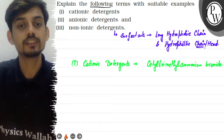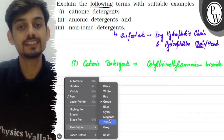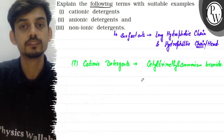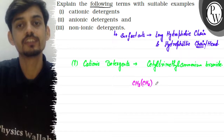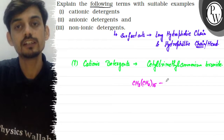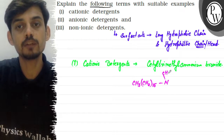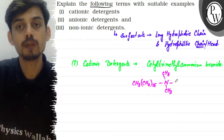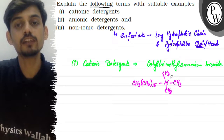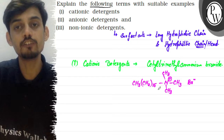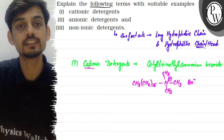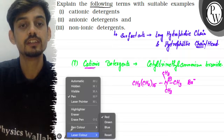In its structure, there is a 16-carbon chain — CH2 whole 15 — giving the cetyl part. Nitrogen forms 4 bonds with 3 methyl groups, making it trimethyl ammonium. This gives a positive charge on the head, which is why this detergent is called a cationic detergent.